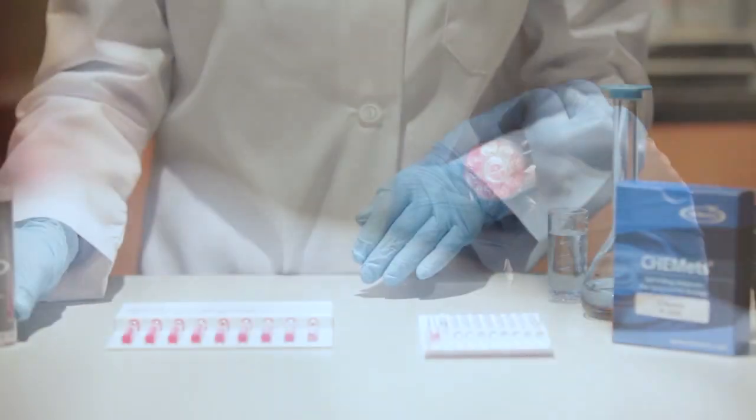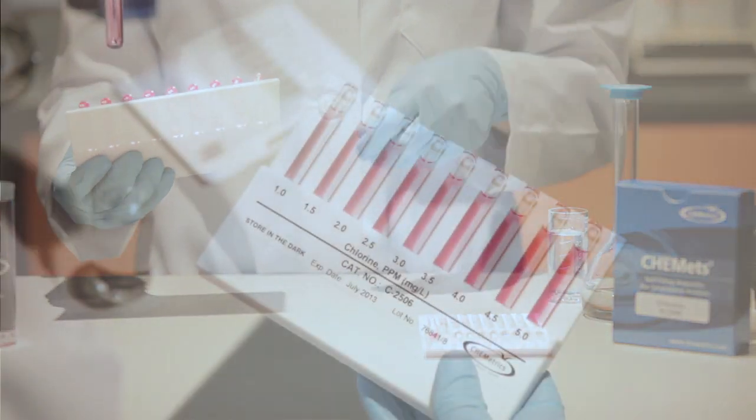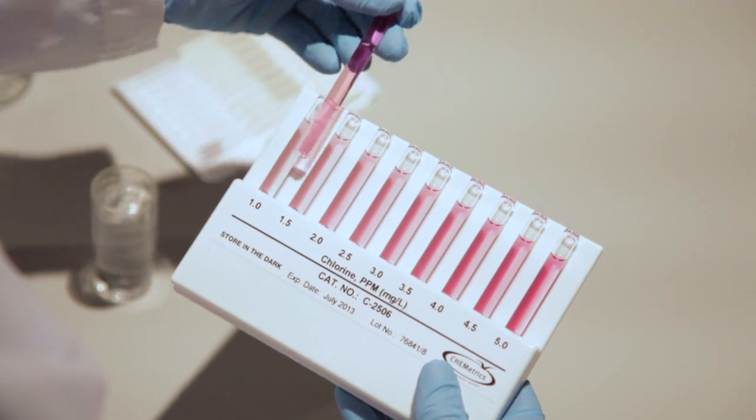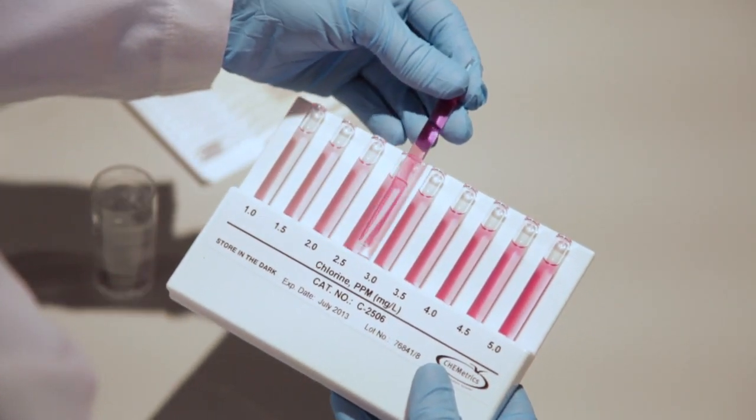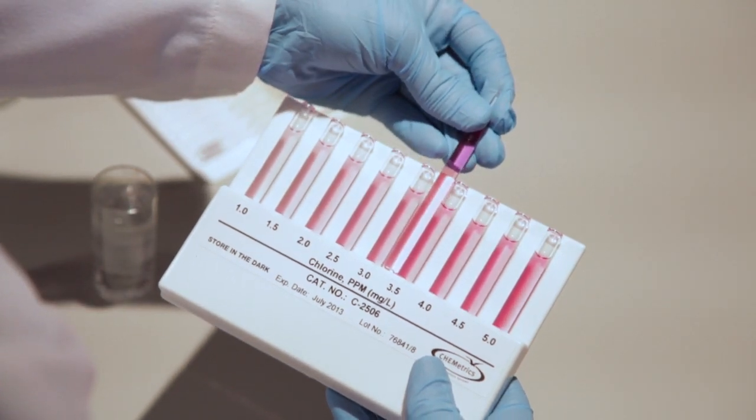For higher concentrations, hold the flat comparator in a nearly horizontal position while standing directly beneath the source of light. Place the ampule between the color standards, moving it along the comparator until the best color match is found.